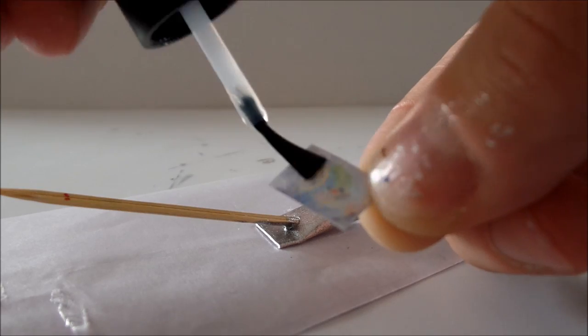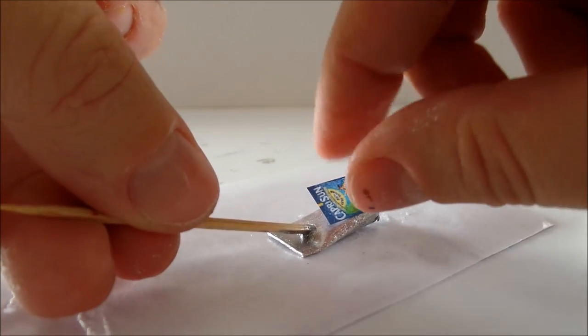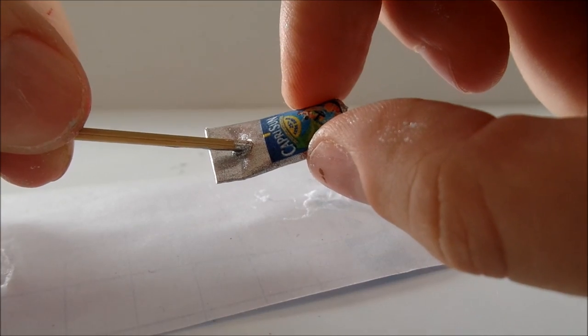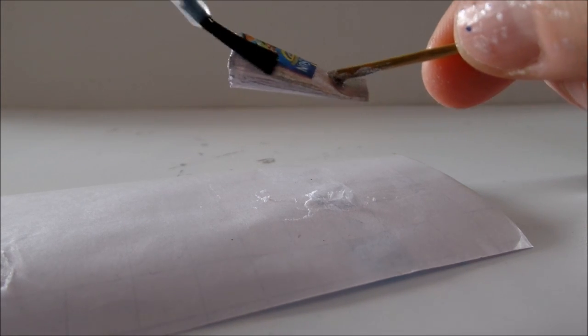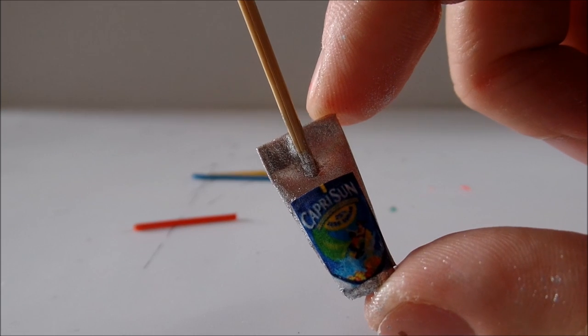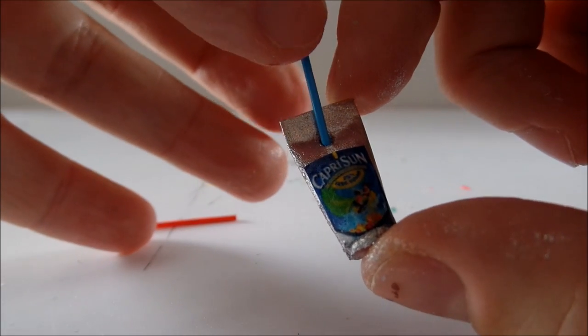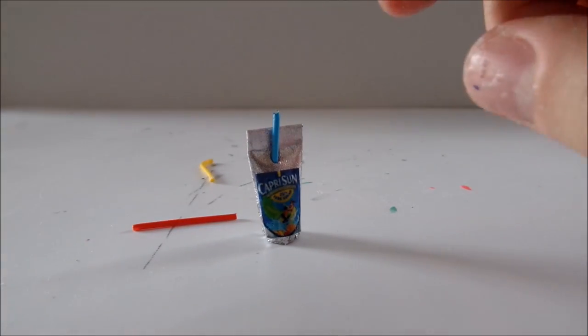I glue it to the drink and hold. You can cover it with nail polish at the top as well. Now take out the toothpick, insert the straw and you're done.